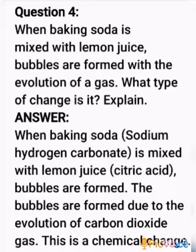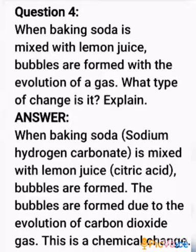The chemical name of baking soda is sodium hydrogen carbonate. When baking soda is mixed with lemon juice — lemon juice contains citric acid — bubbles are formed. The bubbles are formed due to the evolution of carbon dioxide gas. This is a chemical change, because in a chemical change, new substances are formed. Write the answer in your chemistry note.